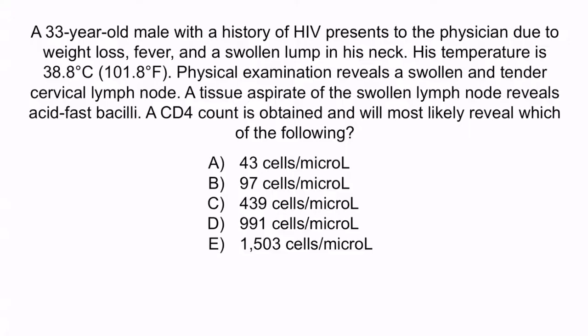Now that we've covered the three organisms, let's review with a question. A 33-year-old male with a history of HIV presents to the physician due to weight loss, fever, and a swollen lump in his neck. His temperature is 38.8 degrees Celsius. Physical examination reveals a swollen and tender cervical lymph node. A tissue aspirate of the swollen lymph node reveals acid-fast bacilli. A CD4 count is obtained and will most likely reveal which of the following?